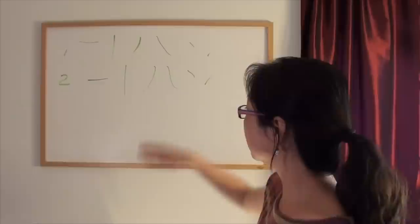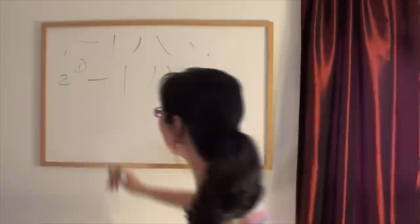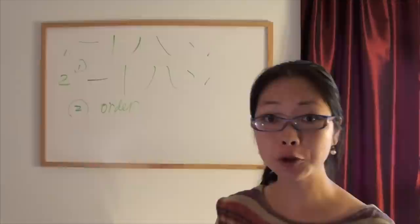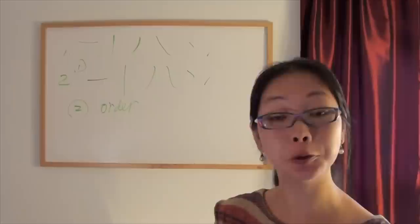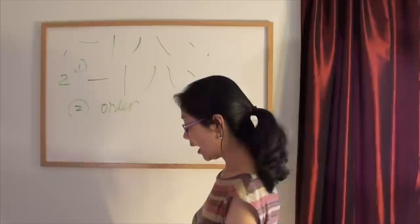All the strokes have their own special directions. And besides directions, I said there are two things you need to pay attention to. The second thing is: since the majority of Chinese characters are formed with more than two strokes, among all the strokes they have a stroke order — meaning which one should go first, which one should go second. We value more the process than just the result, so the order is very, very important. Let's take a look at the rules for the order.